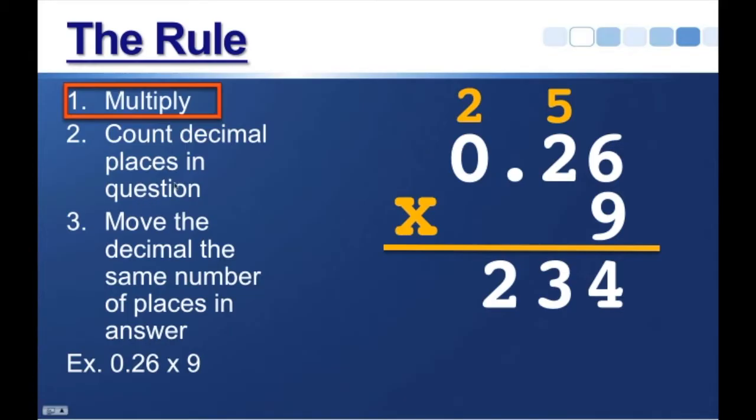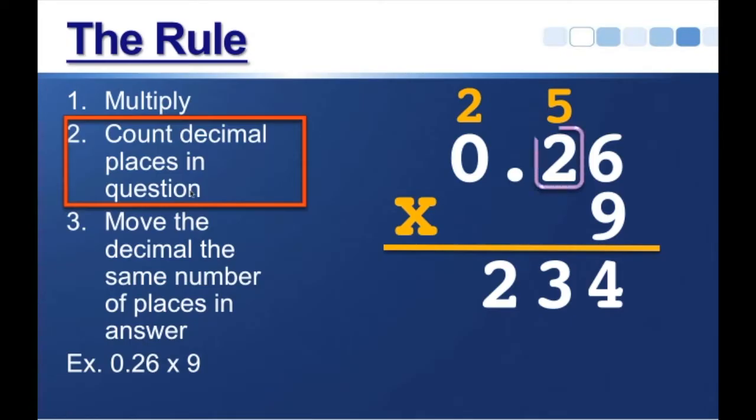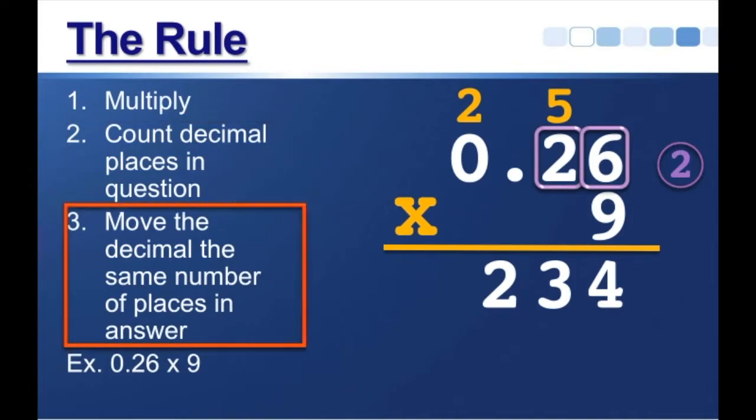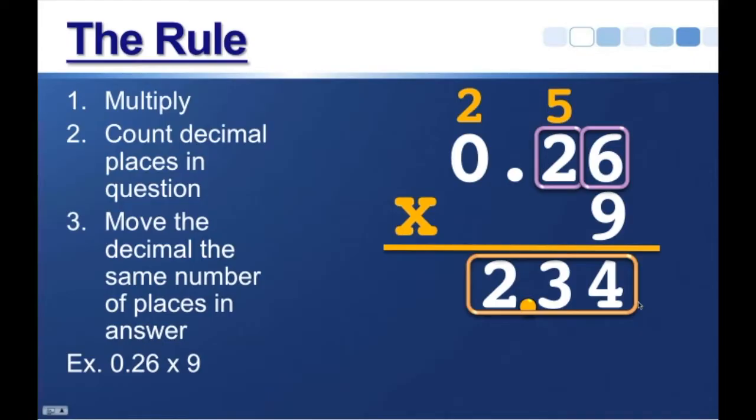Now, step two is to count the decimal places in the question. Well, how many decimal places do I have in the question? I have one here and one here, so I have a total of two places to the right of the decimal. So that brings me to step three, I'm going to move the decimal the same number of places in my answer, starting from the right. So if I move my decimal two places from here, 1, 2, place it there, my final answer is 2.34.